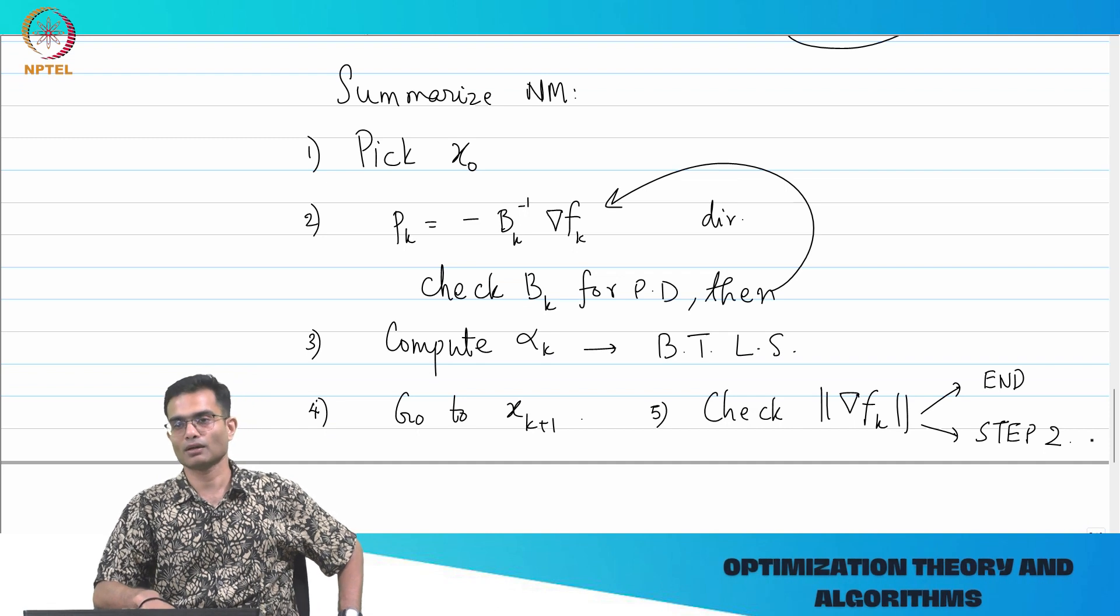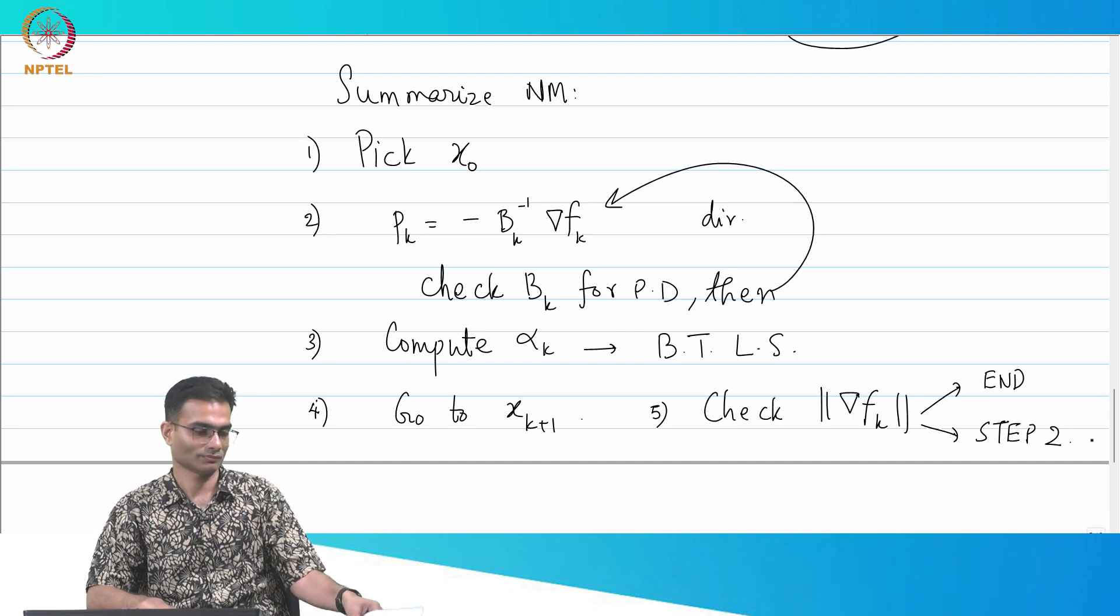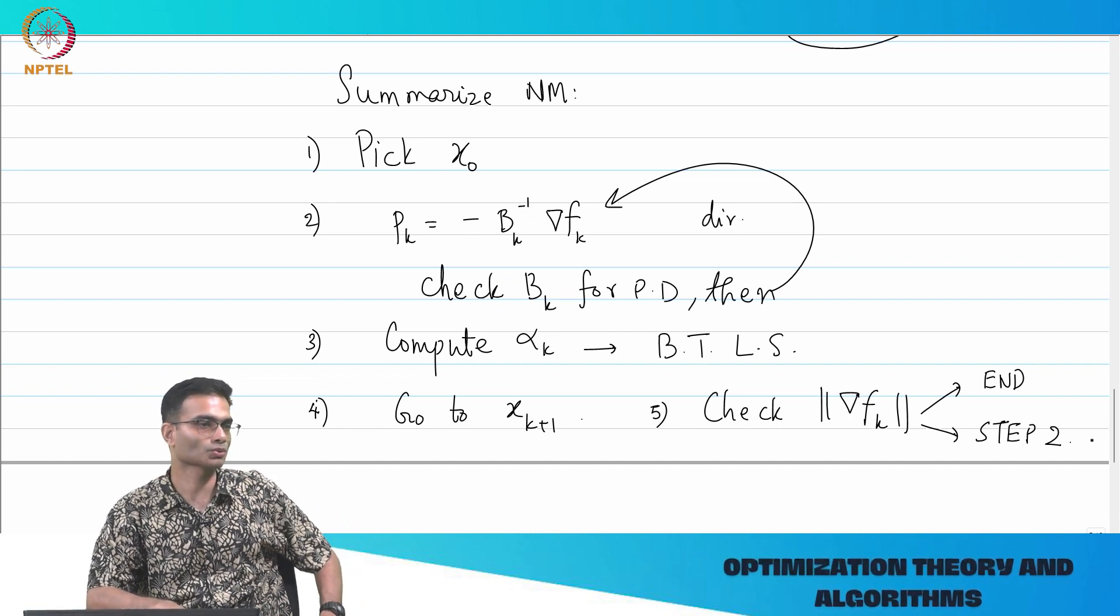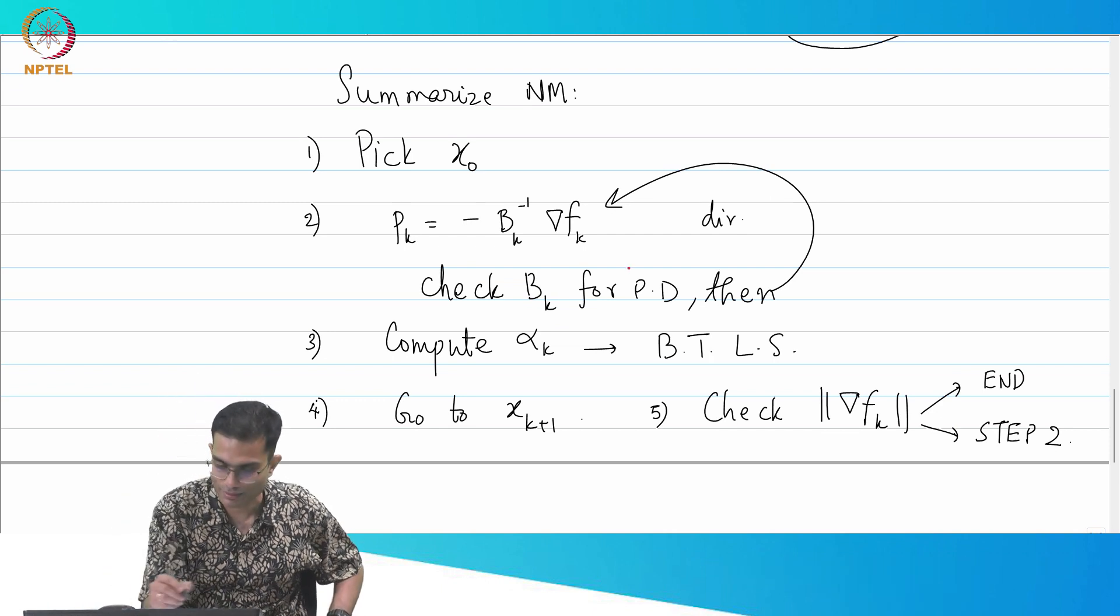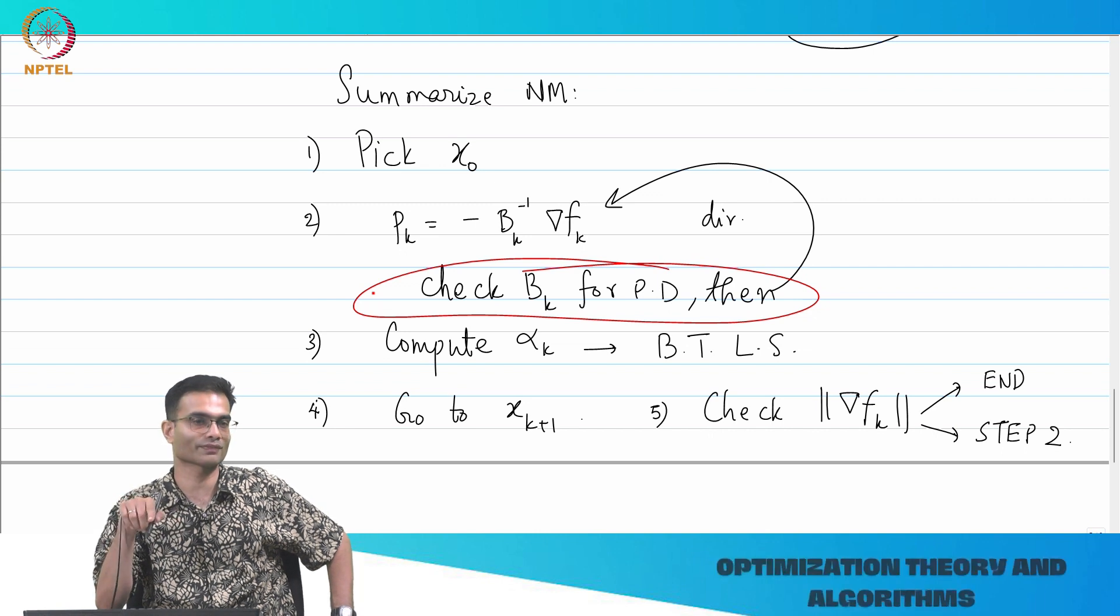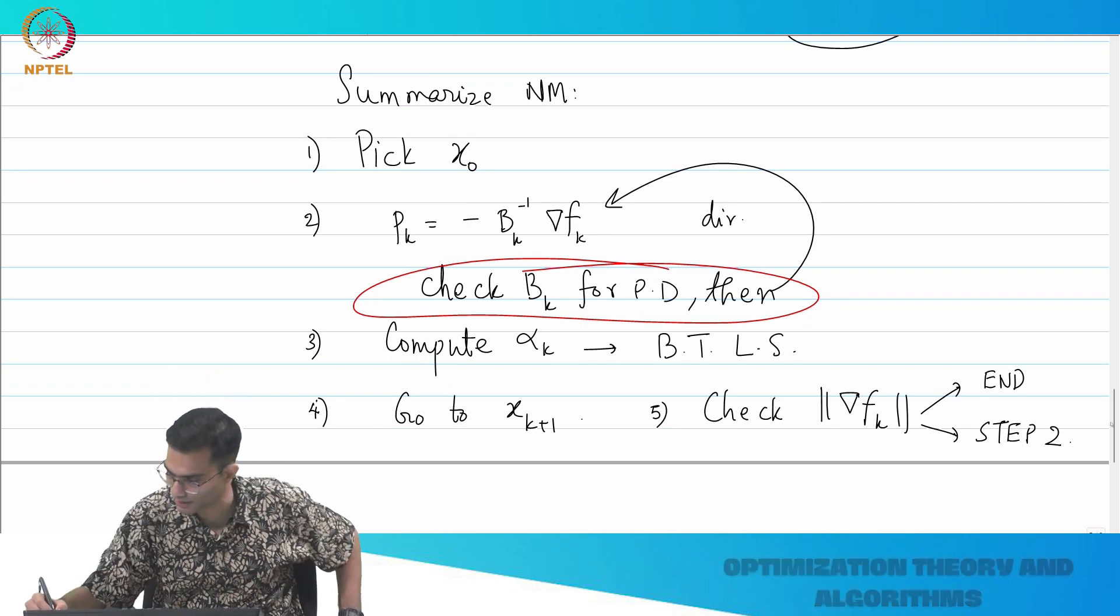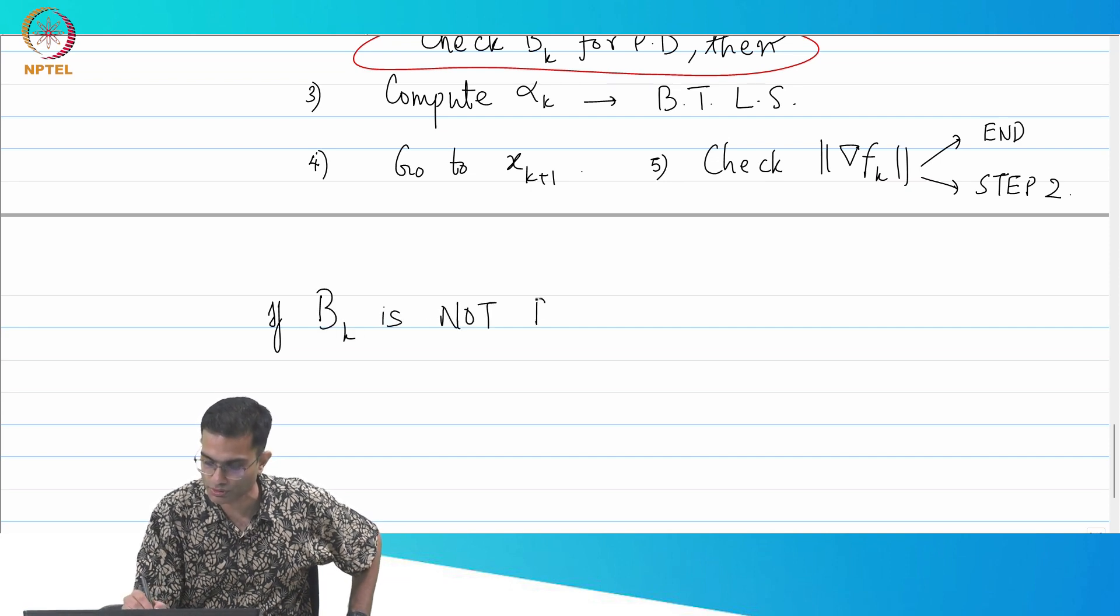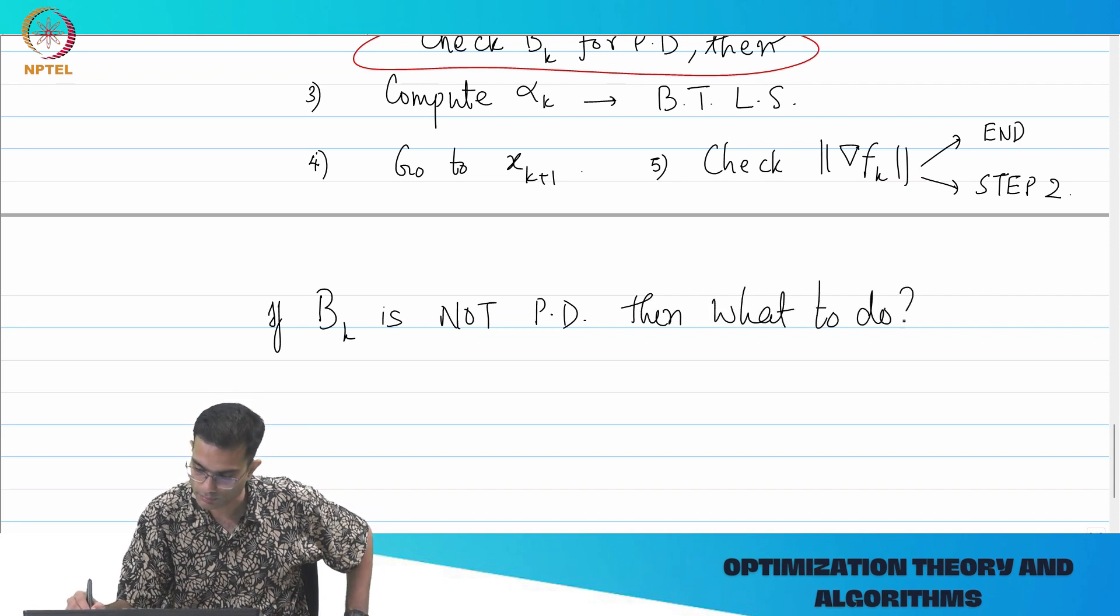So, what do you think is the weakest link in this? You know, when you have a relay race, you need to identify who is the weakest runner, because that determines your outcome. So, who is the weakest runner in this? Step 2, right? This guy. Because I only wrote one, I wrote an incomplete if condition. I wrote if Bk is positive definite, then do this. If it is not, what do I do?